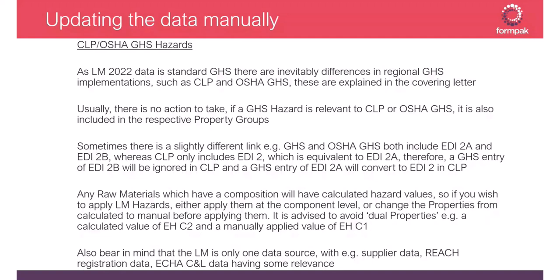For example, a natural complex substance might have a calculated value of Environmental Hazard Chronic 2 but also a manually applied value of Environmental Hazard Chronic 1. This usually isn't a problem — it takes the most severe hazard — but it's good to avoid it for tidiness. Also bear in mind the labeling manual is just one data source; others include supplier data, REACH registration data, and ECHA C&L inventory data, all of which may have some relevance to your products.